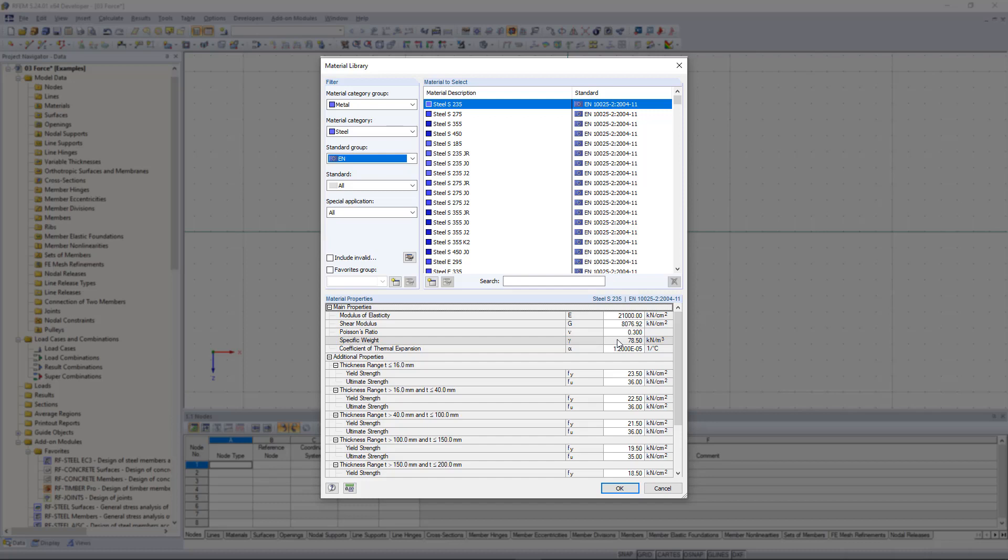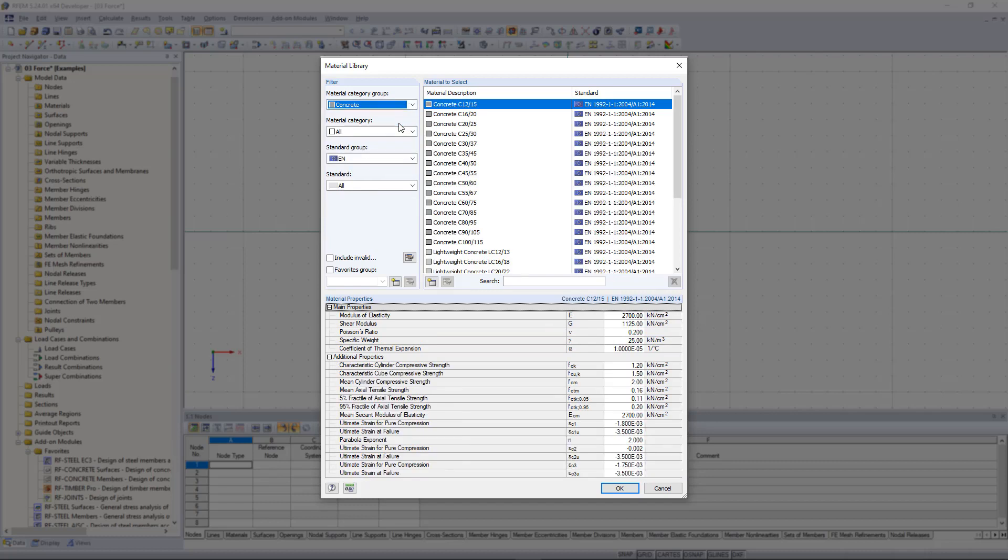We check the same material parameters for reinforced concrete. The specific weight here is 25 kilonewtons per cubic meter.